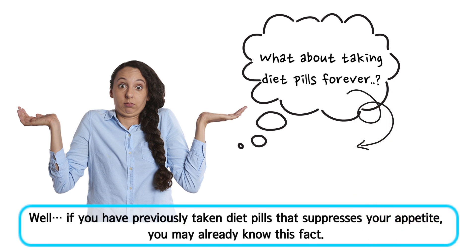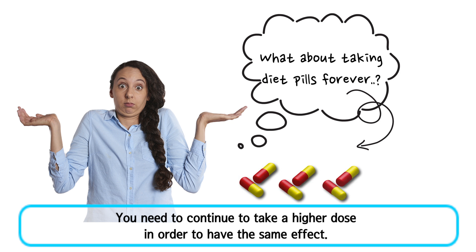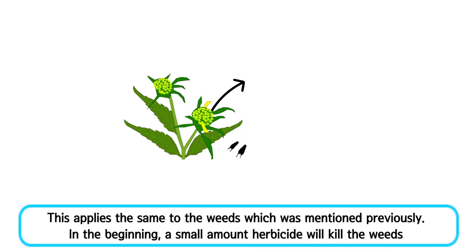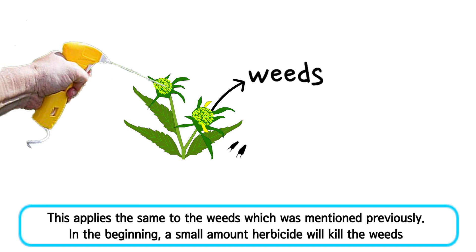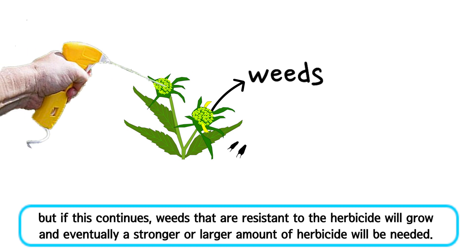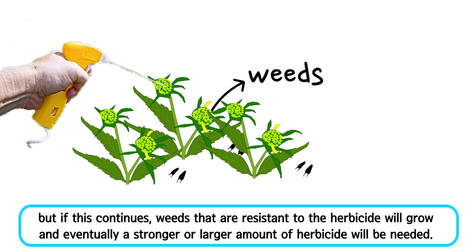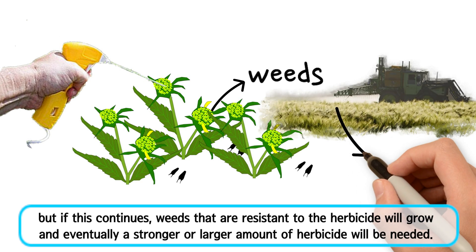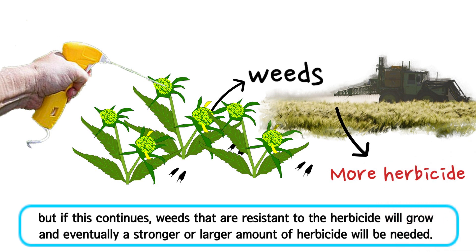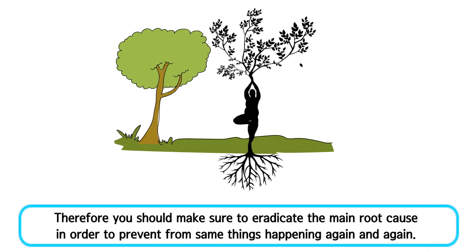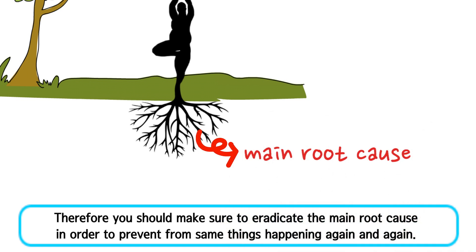Can I just take diet pills for the rest of my life and maintain my weight? Well, if you have previously taken diet pills that suppress your appetite, you may already know this fact — you need to continue to take a higher dose to have the same effect. This applies the same to the weeds mentioned previously. In the beginning, a small amount of herbicide will kill the weeds, but if this continues, weeds that are resistant to the herbicide will grow, and eventually a stronger or larger amount of herbicide will be needed.